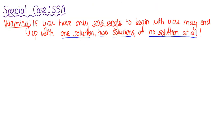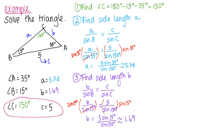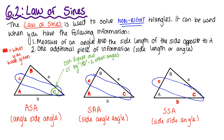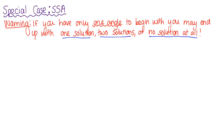Here's the thing about law of sines that makes it a little weird: the side-side-angle case. If you have only one angle to begin with — unlike our previous examples which each had two angles — you are in the side-side-angle situation, and there are three things that could happen: you may end up with one solution, two solutions, or no solution at all.